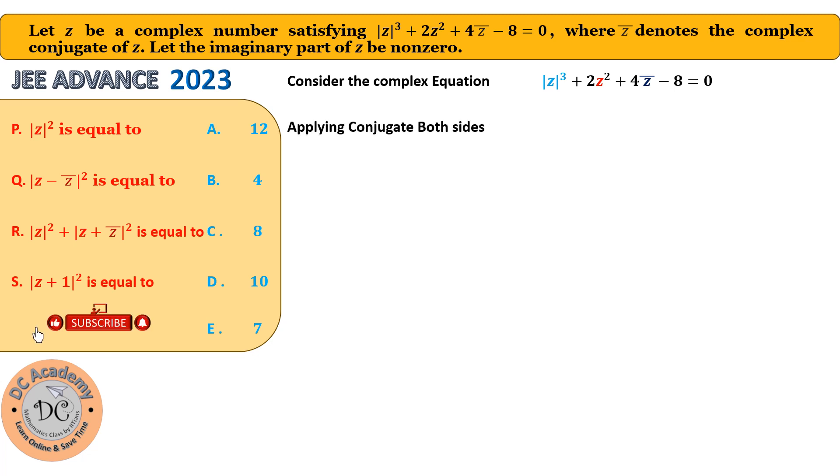So what happens then? As |z| is a real number, the conjugate doesn't apply on it. So it becomes the same thing. If I apply the conjugate on z², it will become z̄². And if I take conjugate on the next term, that is z̄, it becomes 4z. And again the constant term, that will remain unchanged.